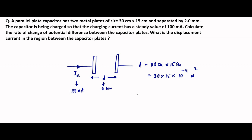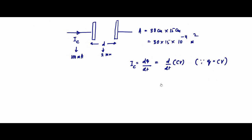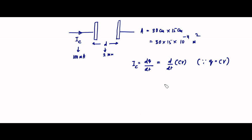The basic definition of any current, whether displacement or conduction, is i = dq/dt — the rate of flow of charge with respect to time. The conduction current or charging current follows the same thing, as it is related to the charging of this parallel plate capacitor. We write this as d/dt of CV, because charge in a parallel plate capacitor is Q = CV. Since capacitance is constant, this becomes C × dV/dt.